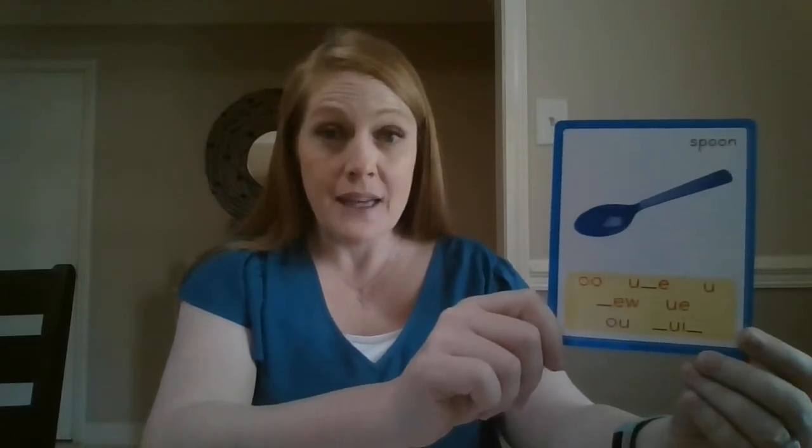OO, U blank E, U, blank EW, UE, OU, and blank UI blank. Whenever you see these blanks before or after or even in the middle, that means that a consonant is going to go in that place.